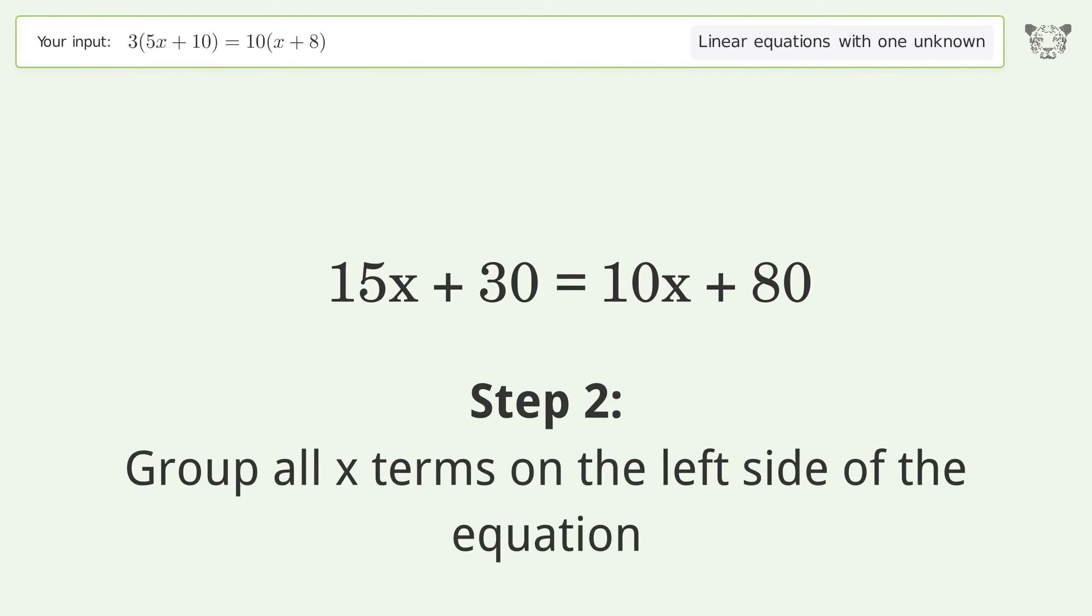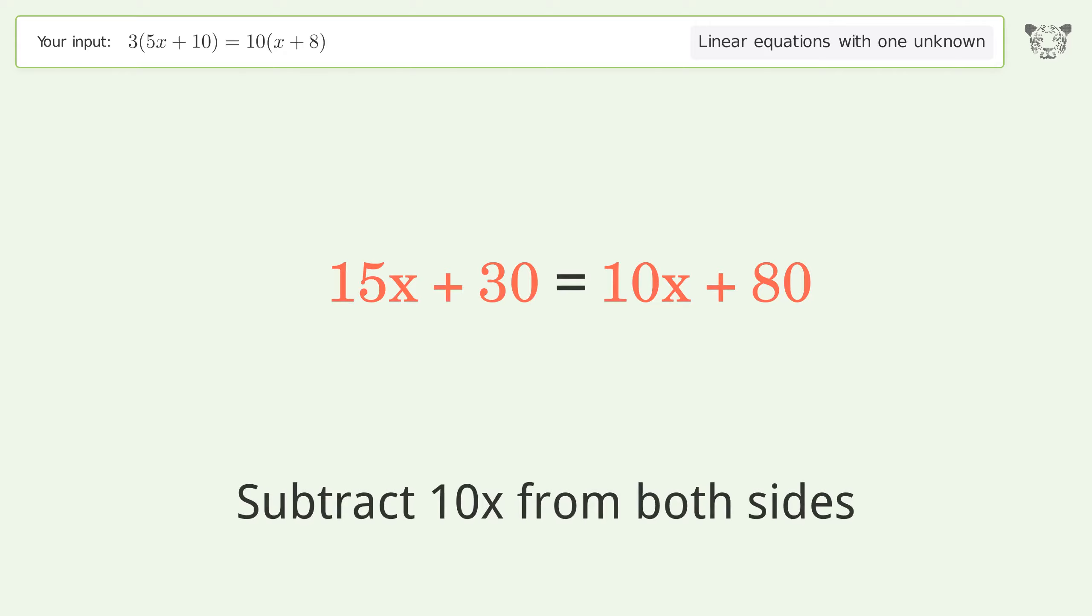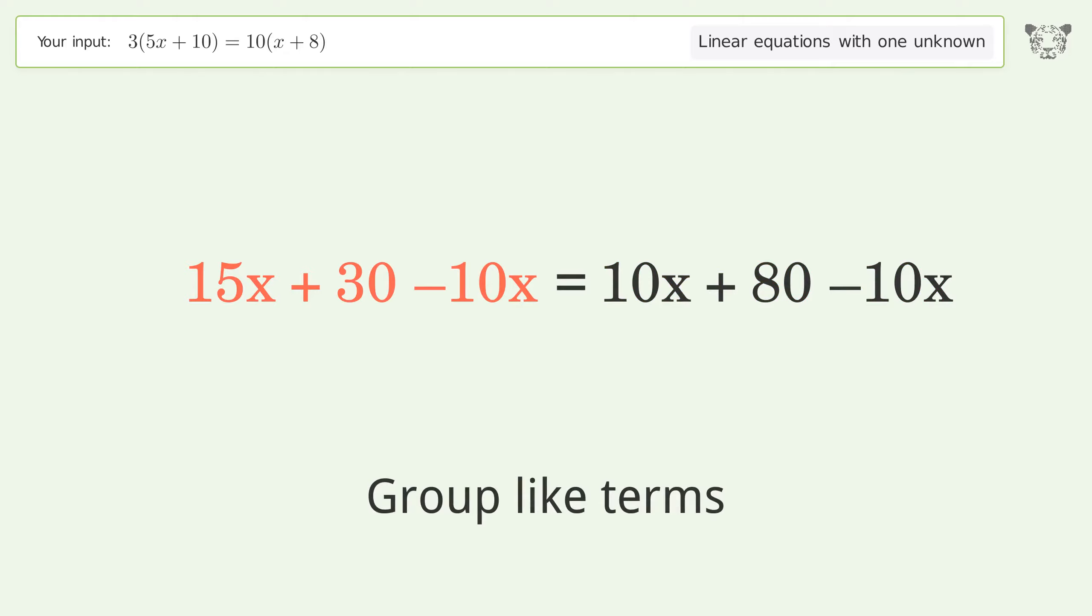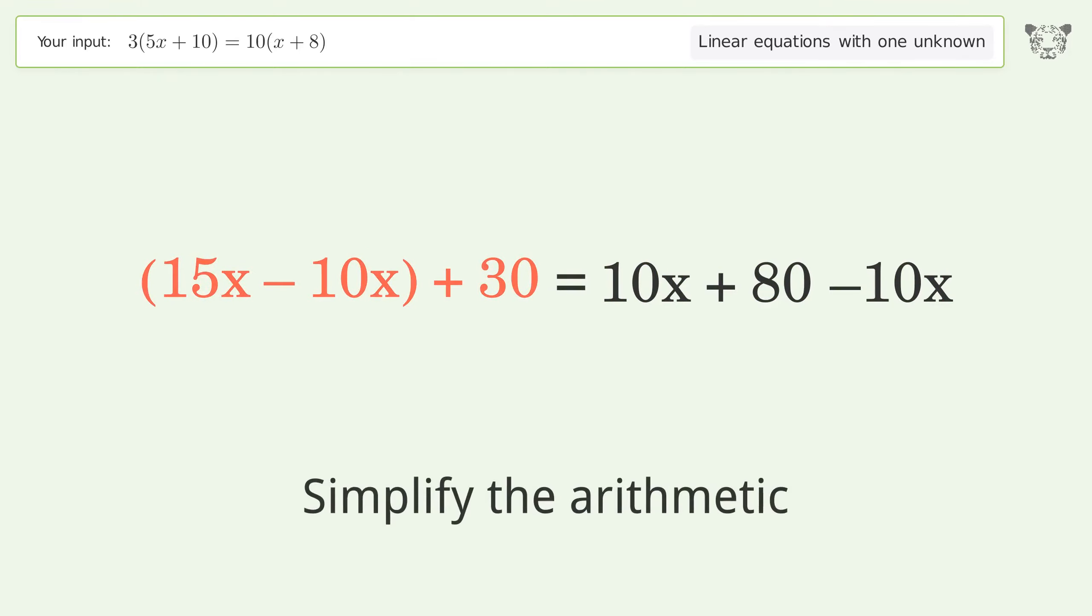Group all x terms on the left side of the equation. Subtract 10x from both sides. Group like terms and simplify the arithmetic.